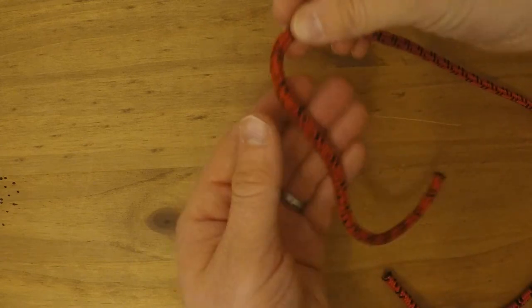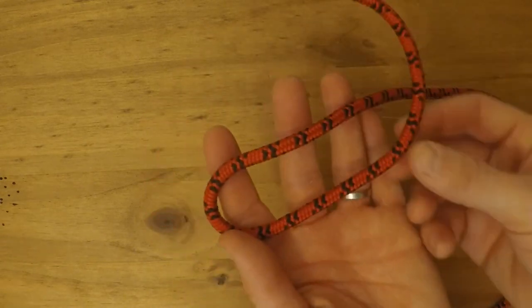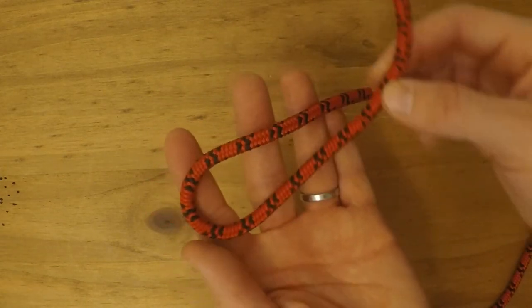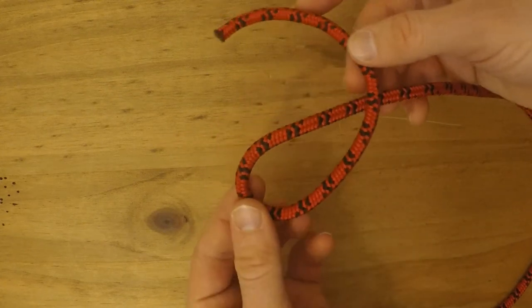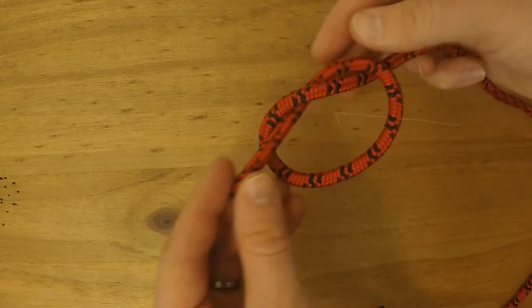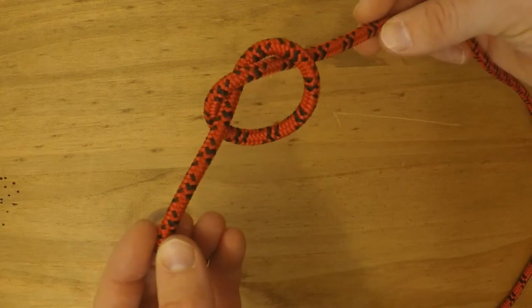It's important to know what a figure eight knot is not, pun intended, and that is it's not an overhand knot where you pass over and then directly into the loop and that looks like a pretzel.